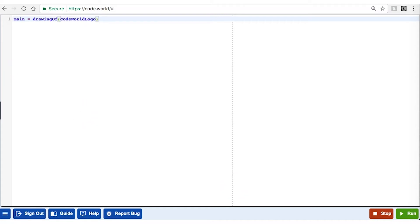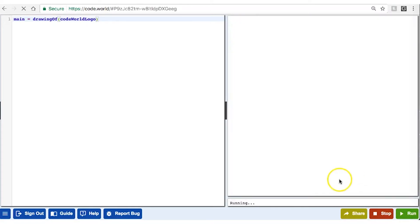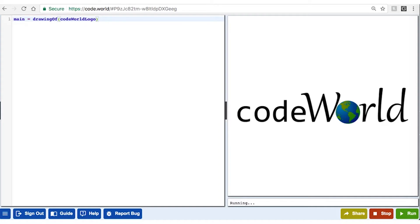Okay, you should be looking at the code world logo. You just wrote your first program. If you got an error message, go back and double-check all your spelling, punctuation, and capitals. Make sure your program looks exactly like the one I showed you.